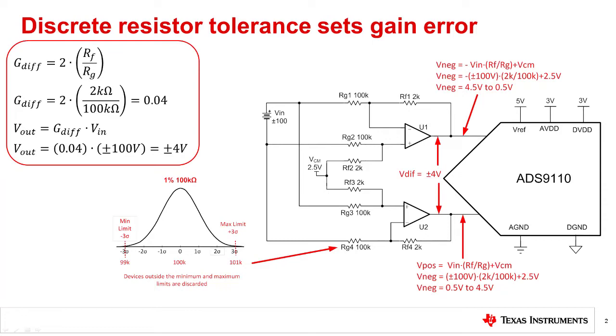Often, engineers will do a worst case analysis based on the resistor tolerance, but as we mentioned before, this can yield results that are statistically unlikely.